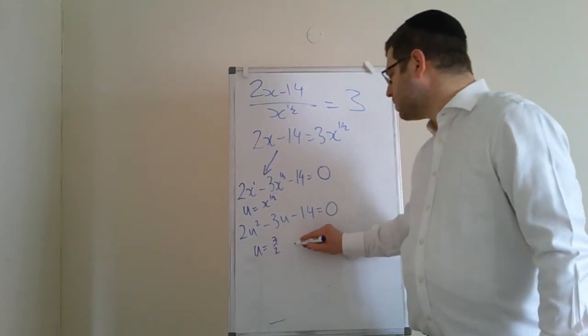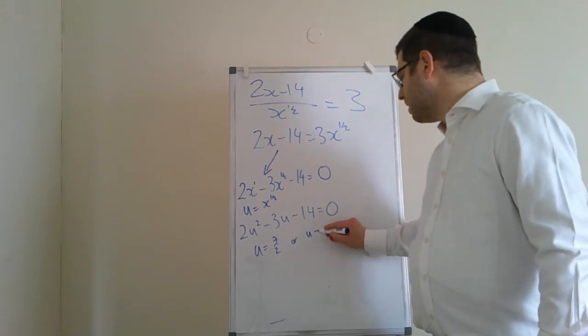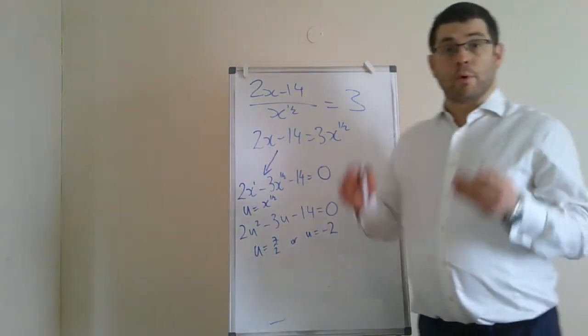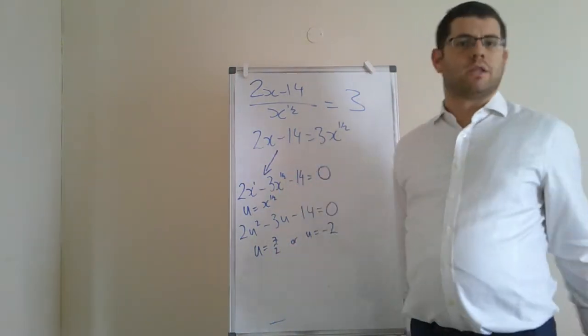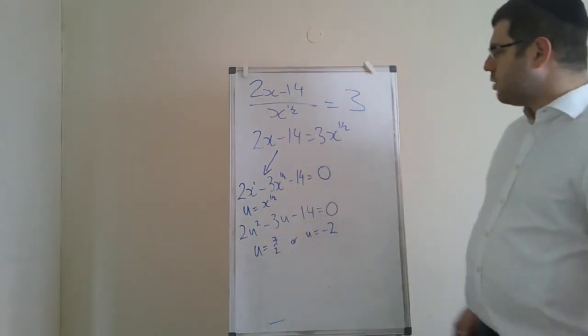So if you set a substitution, if you say u is equal to x to the half, because that power is double, that's effectively u squared. If you square both sides, that becomes x. So this effectively becomes 2u squared minus 3u minus 14. You get two solutions: u is 7 over 2 and minus 2. Right, but we are not finished. Those are u values. So remember, u is just a random letter that I use for the substitution.